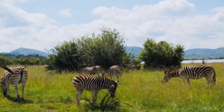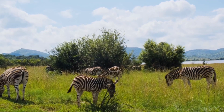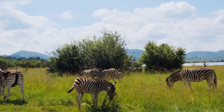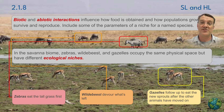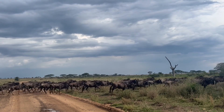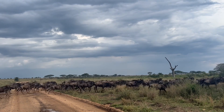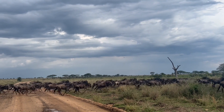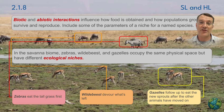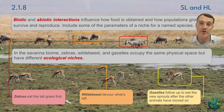First, the zebras come in and eat the top parts of the grasses — the tall grasses — leaving just the short grasses behind. That's what the wildebeest love, so the wildebeest follow the zebras, coming in after them and occupying a different niche in time.